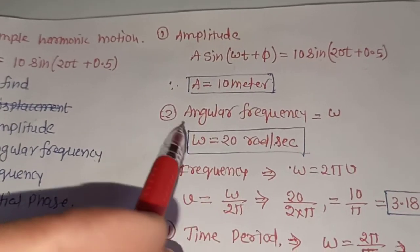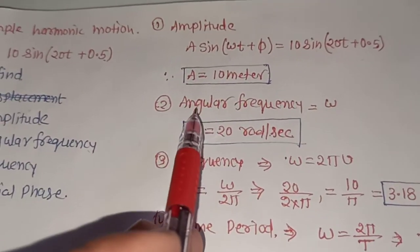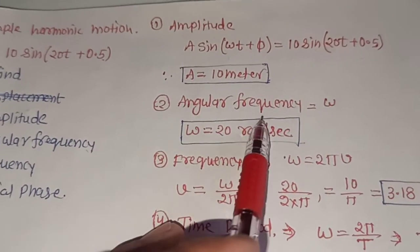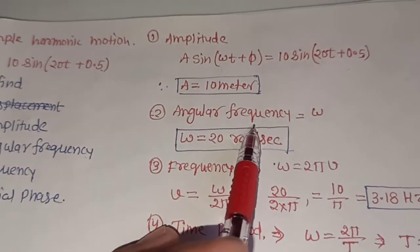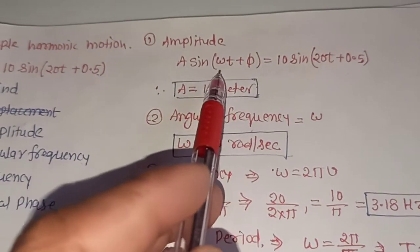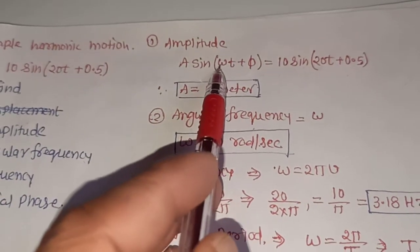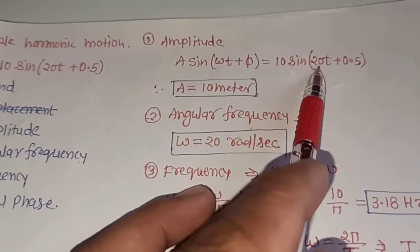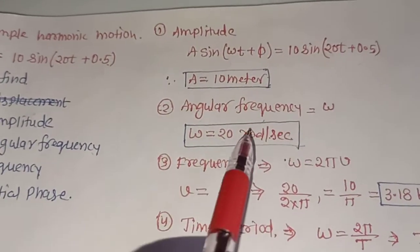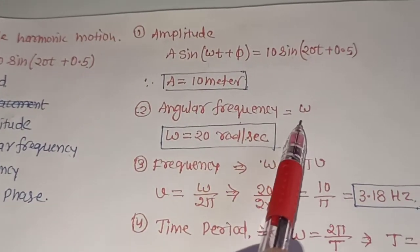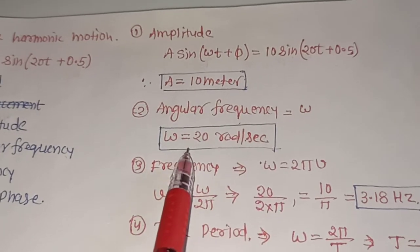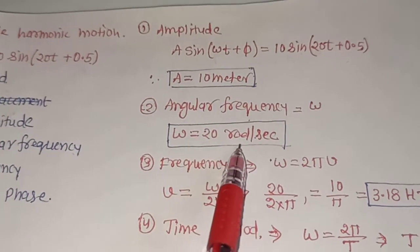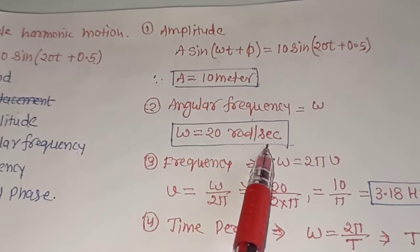It is very easy. Now we have to find the angular frequency, also called angular velocity or omega. You can see that the angular frequency omega is 20 radians per second.